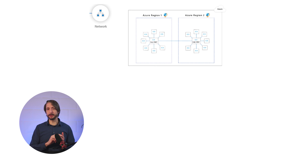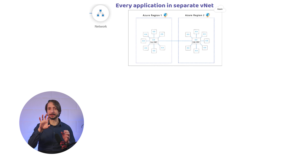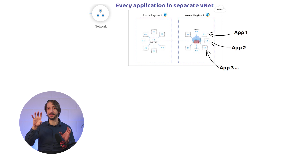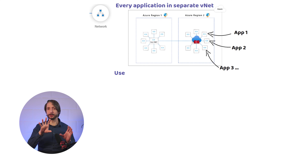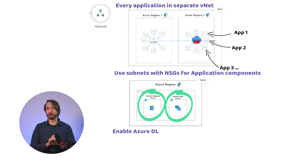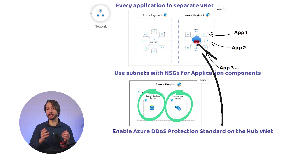For networking, we can place each application in a separate VNet and connect them using a hub-and-spoke model. In practice, you create a separate VNet for each application, with a hub VNet and an Azure Firewall it communicates with. Put application components in different subnets protected with network security groups — for example, web servers should be in a different subnet than the backend database. Enable Azure DDoS Protection Standard on the hub VNet to protect from volumetric network-layer attacks.